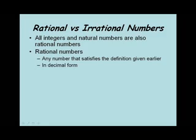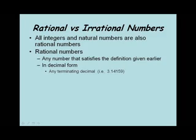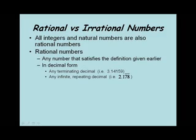If we look at numbers in decimal form, this is where it can be more tricky. Any terminating decimal, like the number 3.14159, is a rational number. A terminating decimal is one that has a finite number of decimal places — the number ends or terminates. Three point one, three point one four, three point one four one — as long as the decimal doesn't go on forever, it's a terminating decimal and as such is a rational number. Any infinite repeating decimal, like the number 2.178 where the seven-eight repeats, is also a rational number. Any time you see a repeating decimal, you can recognize that as a rational number.